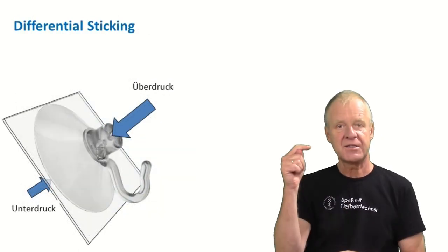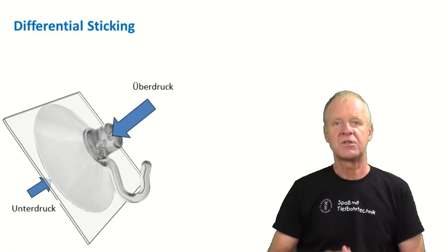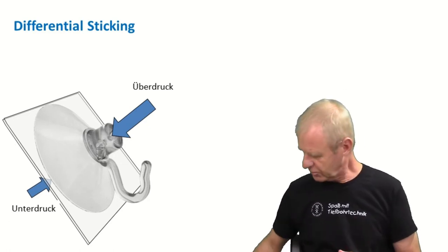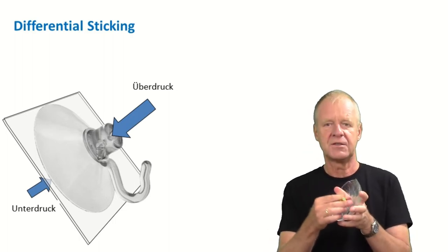So, this situation is similar to a suction cup. In our borehole, our drill string is pressed against the borehole wall so that it cannot be moved and it is stuck. This is a mess. So the question is how can we avoid such differential sticking in our borehole?